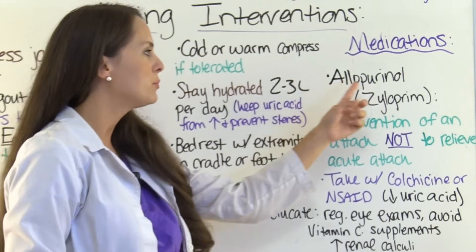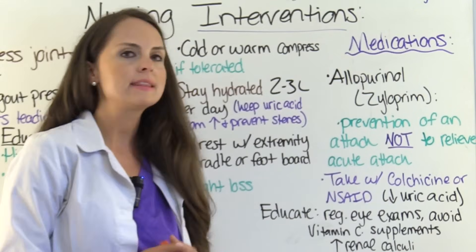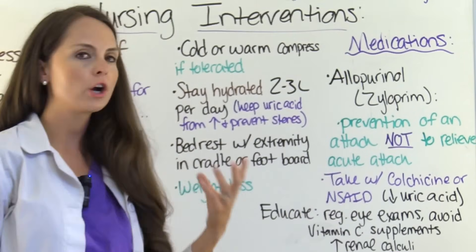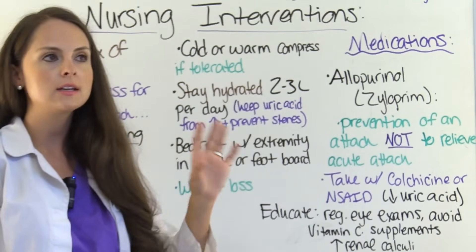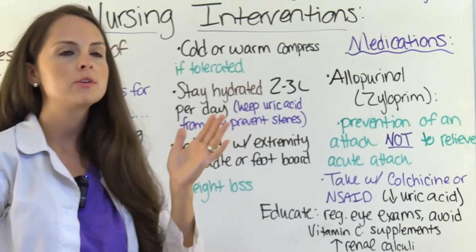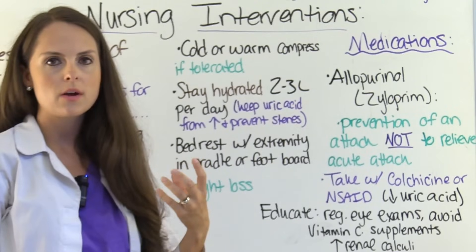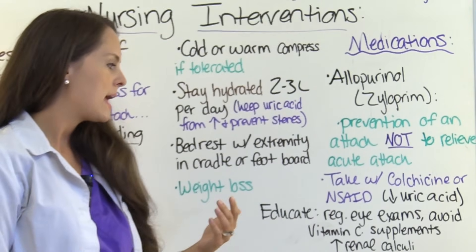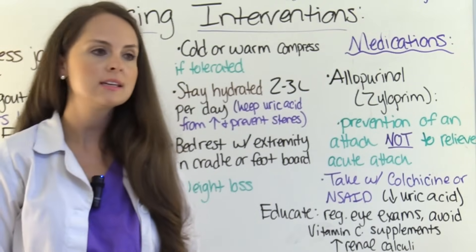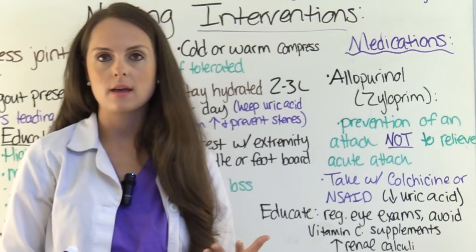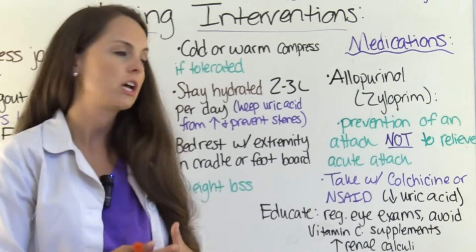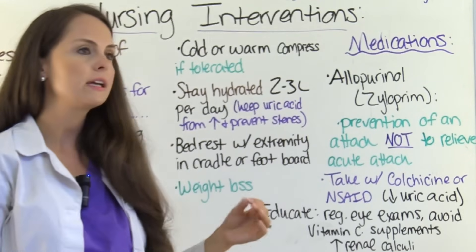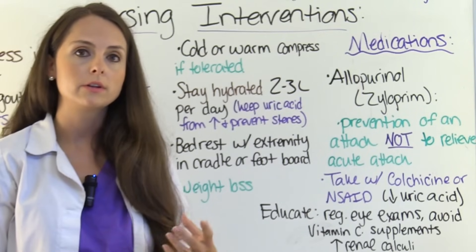Another drug prescribed in gout is allopurinol, also called Zyloprim. This drug is used for the prevention of future gout attacks — it does not relieve current acute attacks. Remember, colchicine, NSAIDs, and corticosteroids are for acute relief. Allopurinol is best for those with chronically high uric acid levels, and may be prescribed alongside colchicine or NSAIDs. Educate the patient that they will need regular annual eye exams because this medication can cause vision changes. It is also best to avoid large doses of vitamin C supplements while taking allopurinol, as it can increase the risk of developing renal calculi.